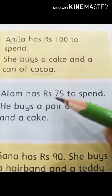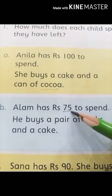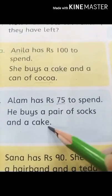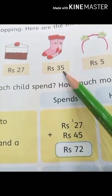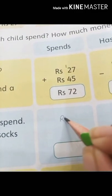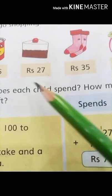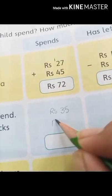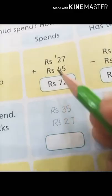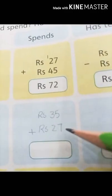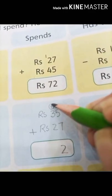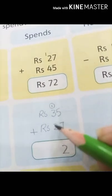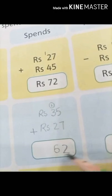Moving to part B: Alim has 75 rupees to spend. He buys a pair of socks and a cake. The pair of socks costs 35 rupees and the cake costs 27 rupees. Adding them: 7 plus 5 is 12, write 2 and carry 1 to the tens column; then 3 plus 2 plus 1 is 6. So Alim spends 62 rupees.